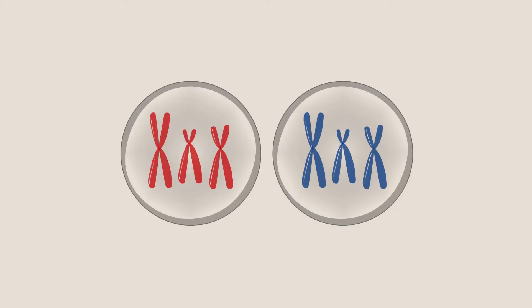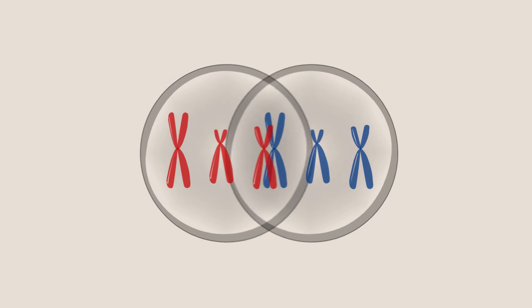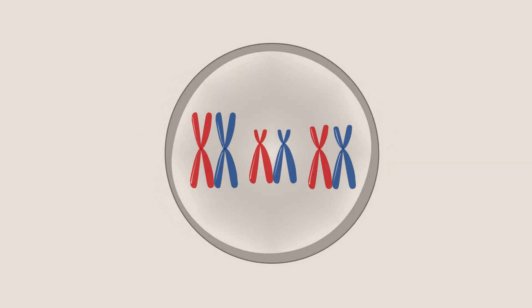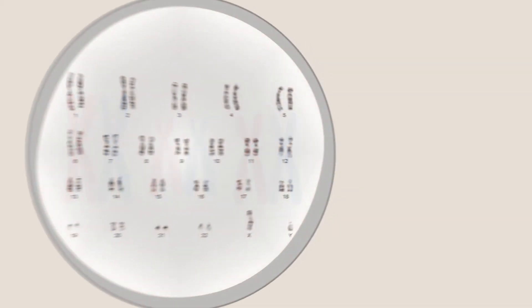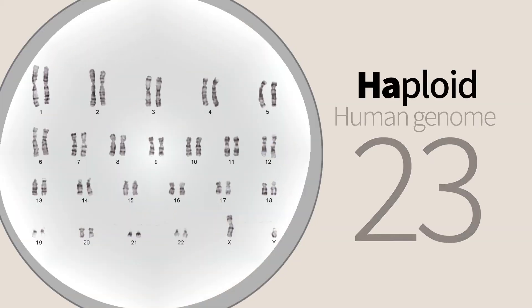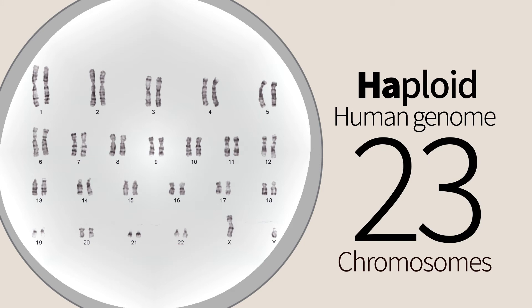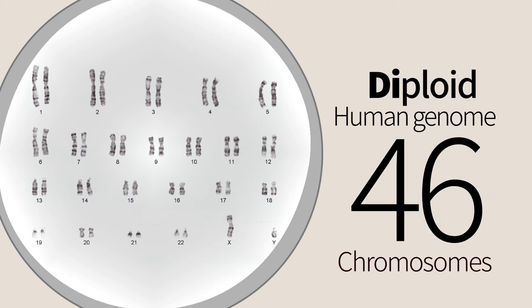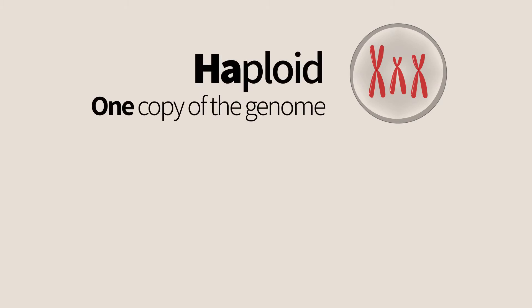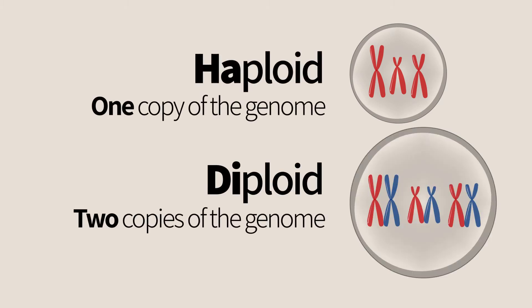Sexual reproduction is a procedure by which two cells fuse to form one new cell. Each of the original cells contains the entire required genetic information — in humans, for example, 23 chromosomes. The new cell thus contains two different copies of this information — in humans, 46 chromosomes. The one-copy state is called haploid and the two-copy state diploid.